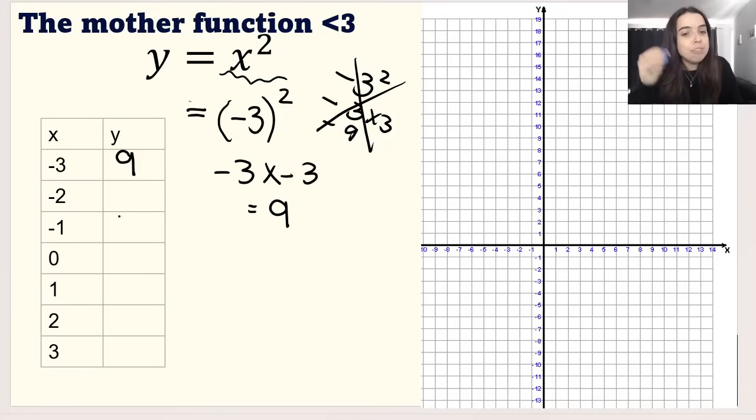You need to use brackets. If we do the same for negative two in brackets, negative two squared, in other words negative two times negative two, we get four. Negative one squared in brackets gives one. Zero squared is zero. One squared is one. Two squared is four. Three squared is nine. Do you see what's happening here with our y values, with our output values?